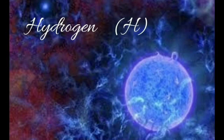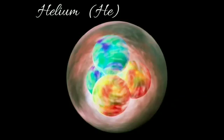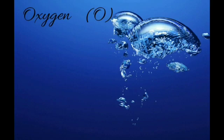Our first element is hydrogen, with atomic number one, which occupies approximately five percent of the known universe. Our second element is helium, with atomic number two, which has contributed 23% to the known universe.